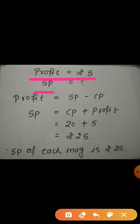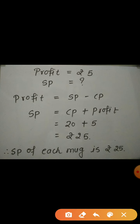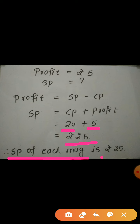We have to find out SP. Since the profit is given to us, we can use the formula of profit: Profit = SP minus CP, that is selling price minus cost price. But here we have to find out the SP. So we shift the term minus CP to the left — it will become plus. So SP is equal to Profit plus CP, or CP plus Profit. Now substituting the values: CP is Rs. 20 and profit is Rs. 5, so 20 plus 5 gives Rs. 25. Therefore, the selling price of each mug is Rs. 25.